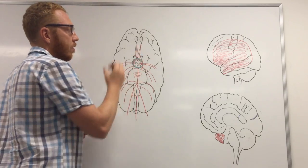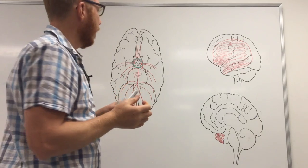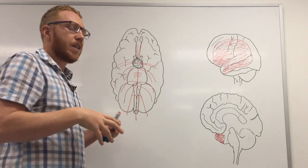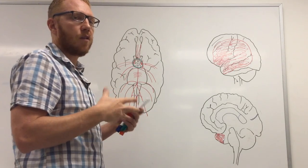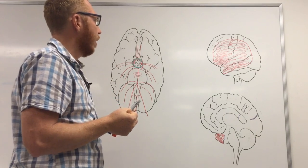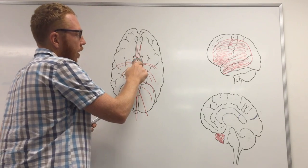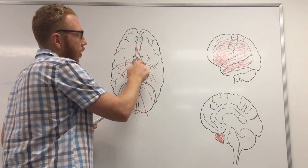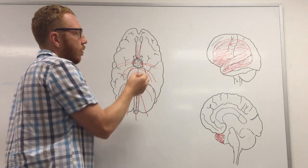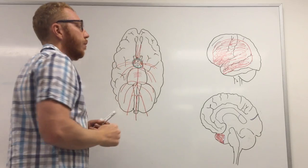In terms of subarachnoid bleeds — bleeds in the subarachnoid space — about 90% arise from aneurysms in the circle of Willis. So 90% of subarachnoid bleeds come from an aneurysm within that circle.